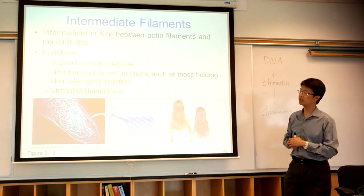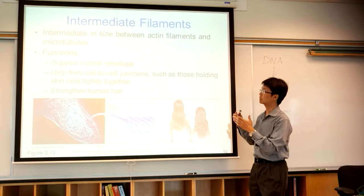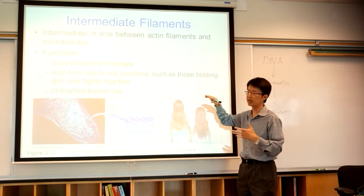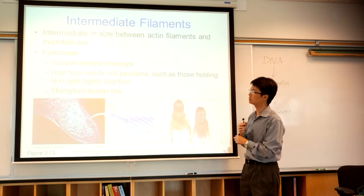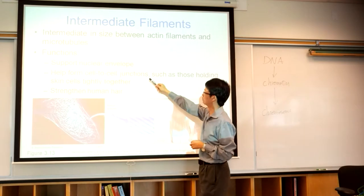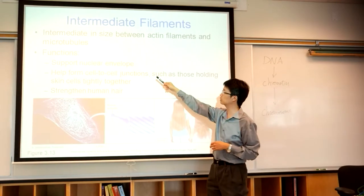Intermediate filament. As the name suggests, the size is between actin and microtubule. That means it is larger than actin but smaller than microtubule. It supports the nuclear envelope, it forms cell junction, we will talk about cell junction which is important, and it also strengthens your hair.